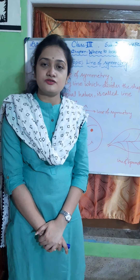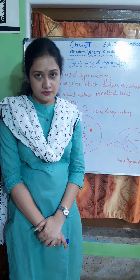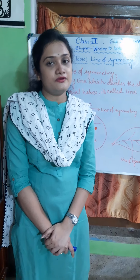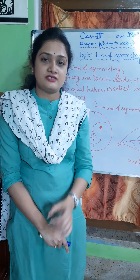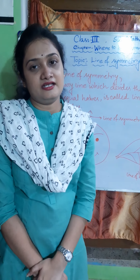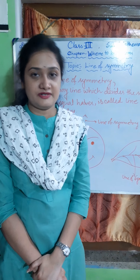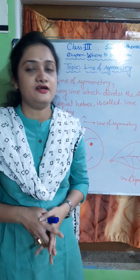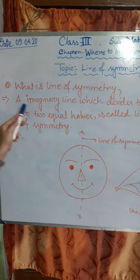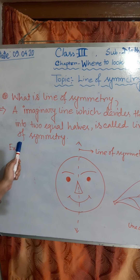Today, I am going to teach you Mathematics. Our first chapter, according to the NCERT book, is back to the chapter form. Now, I am going to teach you the next topic: line of symmetry. Line of symmetry means a line which divides shapes into two equal halves — it is called line of symmetry.